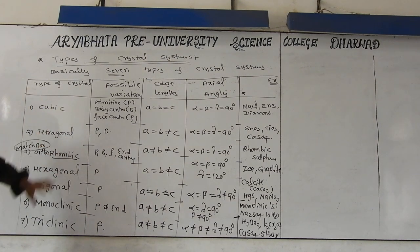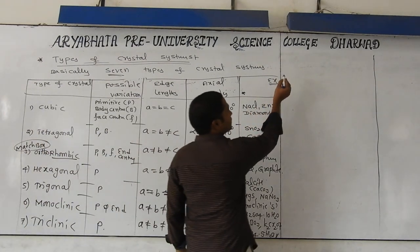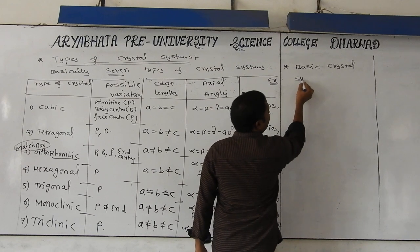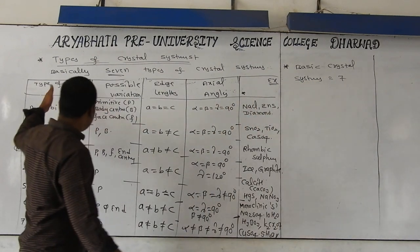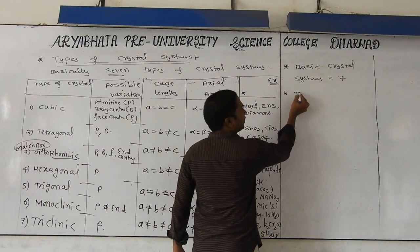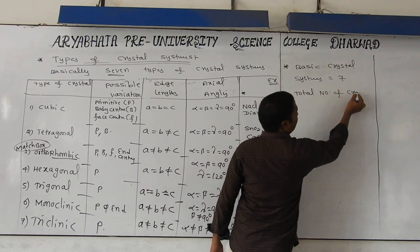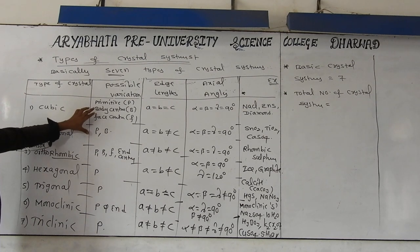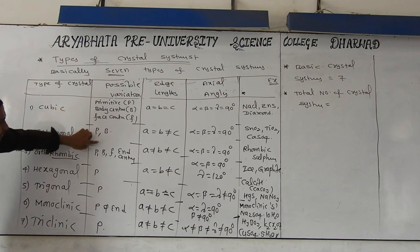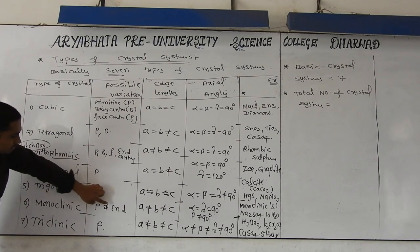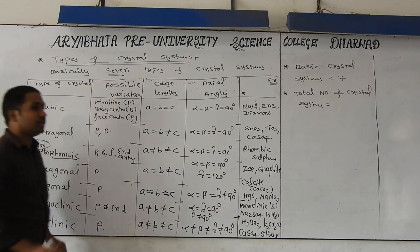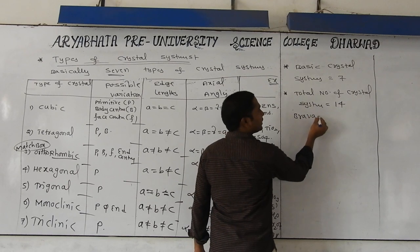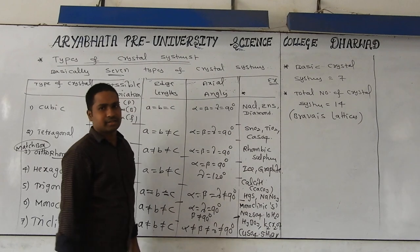All these come under different types of crystal systems — 7 types total. Based on this, questions are asked: basic crystal systems are 7. Total number of crystal systems means counting all possible variations under each system: 1, 2, 3... 14 total. These 14 are called Bravais lattices. Total 14 crystal lattices only we are calling as Bravais lattices.